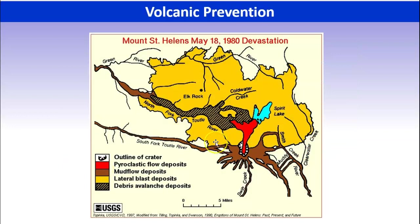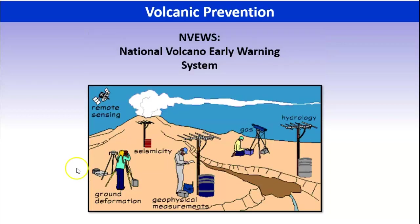That can reduce the impact on society. Here we could see where some devastation occurred during Mount St. Helens — there are blast deposits, lahars, and pyroclastic flows shown. So even after the fact, we're putting this information out there so that in the future, if there's something we can see, we know either where not to build or how to keep people safe and away from dangerous areas.